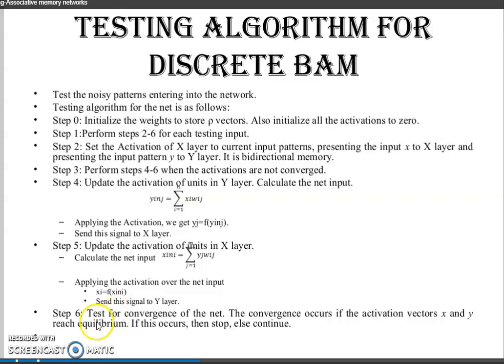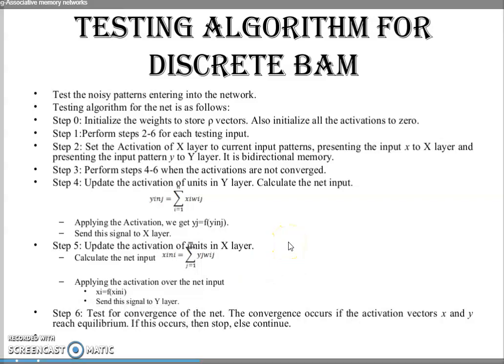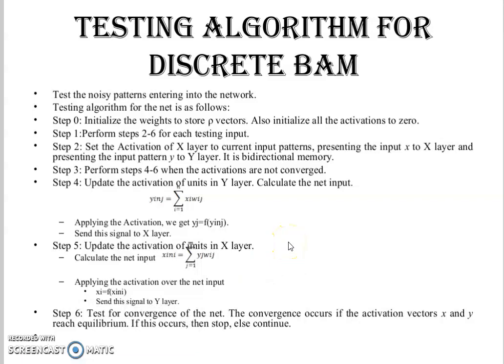Step 6 is to test for convergence of the net. The convergence occurs if the activation vectors X and Y reach equilibrium. If this occurs, then stop; else continue. That is the equilibrium condition we have to satisfy.